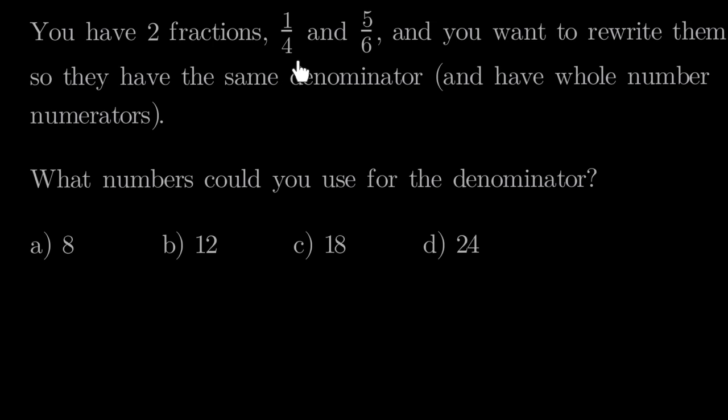So here's our fractions, 1/4 and 5/6, and we want to rewrite these fractions to have new denominators. We currently have a 4 and a 6 as our denominator. Can we just put anything, like maybe 5? Could we change them both to have 5 as the denominator? The answer is no. We have to pick a multiple of 4 and 6, some number that we can multiply for and get this number as an answer.